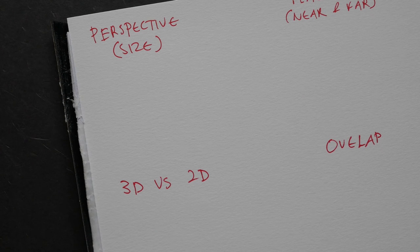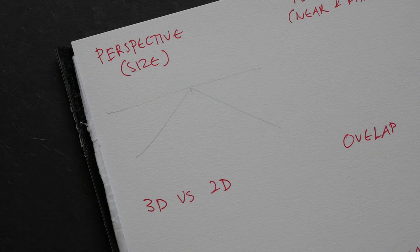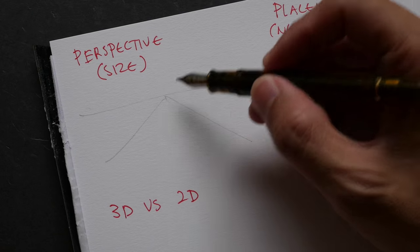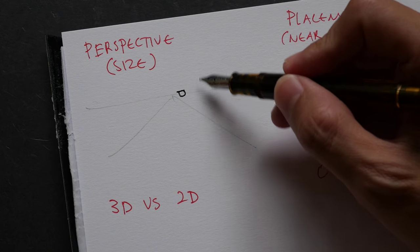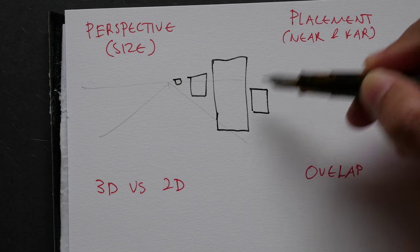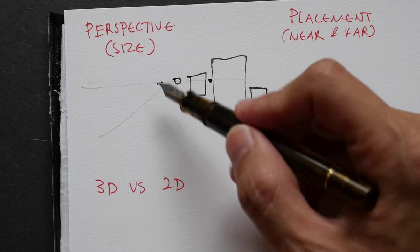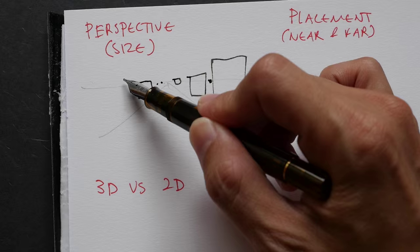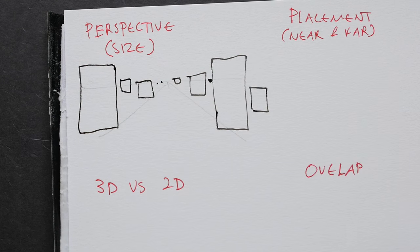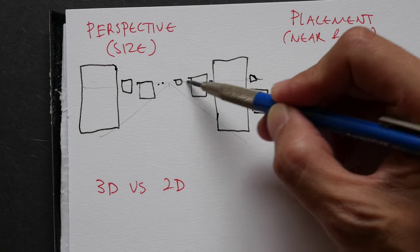The first technique is to vary the size of your objects in your drawing to give the illusion of depth. That's using perspective, because objects that are closer to you would appear larger than objects that are further away. Closer to the horizon I would draw the objects smaller, in the mid-ground maybe something larger. So this is how you can use the differences in size to vary the objects.